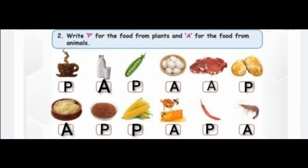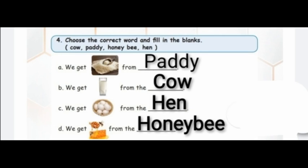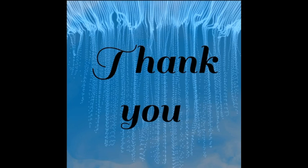Today's homework: Question 1 — write P for food from plants and A for food from animals. Question 2 — choose the correct word and fill in the blanks. Read and write one time. I hope you understood this topic clearly. Meet you in the next class. Happy learning! Bye.